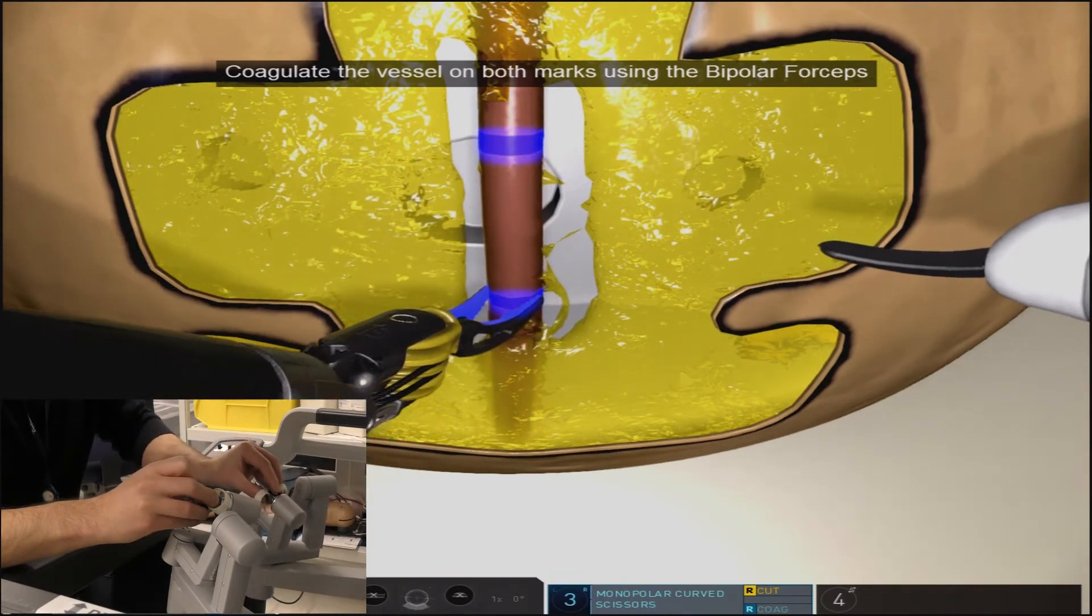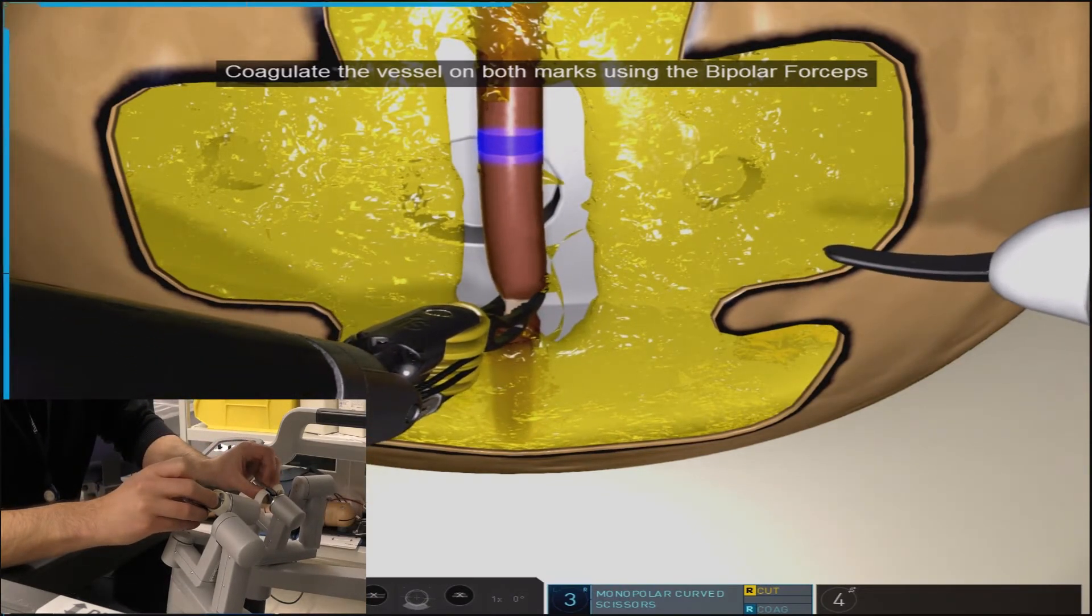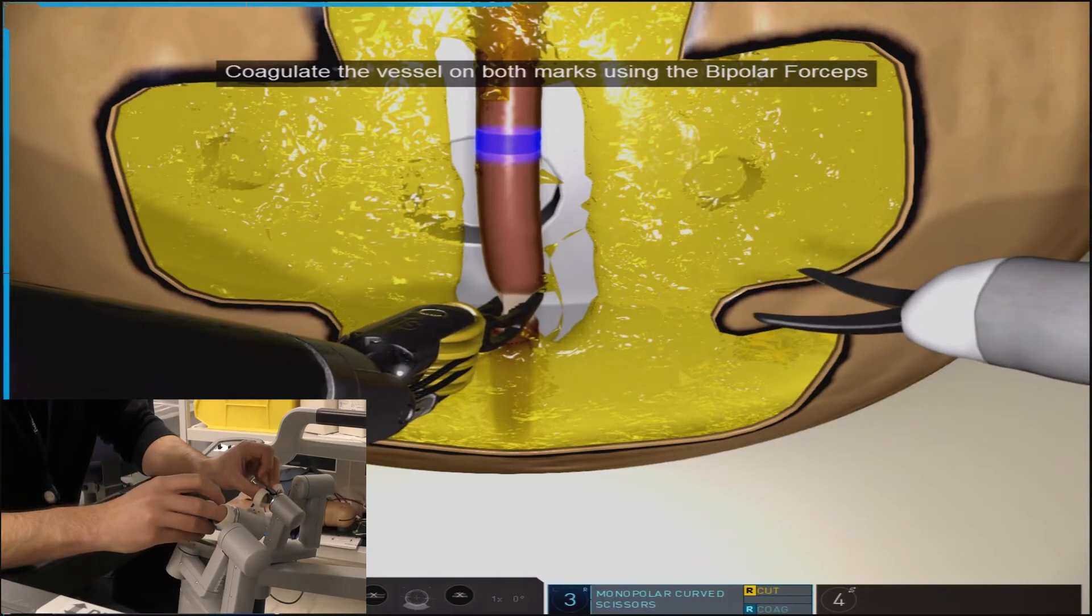And so now with the vessel well exposed, the exercise will prompt us to proceed with our bipolar coagulation.